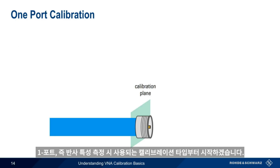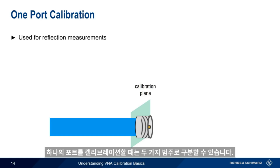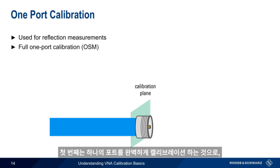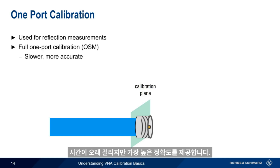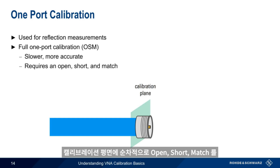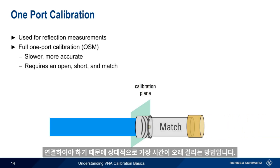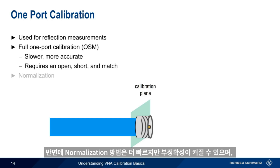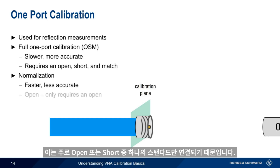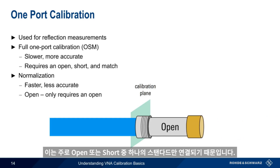Let's start with the one-port calibration types, that is, calibrations used when making reflection measurements. There are really two categories of one-port calibration. The first is a full one-port calibration, which is the slowest type of one-port calibration but provides the highest accuracy. It's relatively slow because it requires an open, a short, and a match to be sequentially connected at the calibration plane. Normalization, on the other hand, is faster but less accurate, primarily because only one calibration standard is connected, either an open or a short.